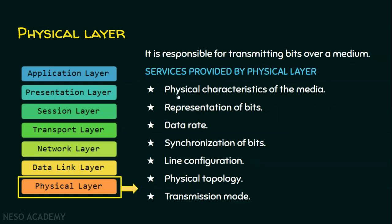Let's see the services offered by the physical layer. It deals with the physical characteristics of the media, which we covered in the previous three lectures. It deals with the representation of bits, meaning encoding. It deals with the data rate — the transmission rate. This layer also offers synchronization of bits and deals with line configuration, which is the topic of this session. It also deals with physical topology — bus, ring, star, mesh, hybrid, and tree topologies. And finally, the transmission mode: simplex, half duplex, and full duplex.